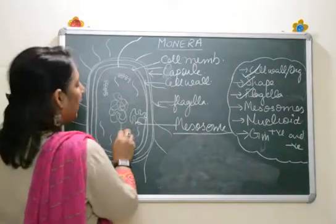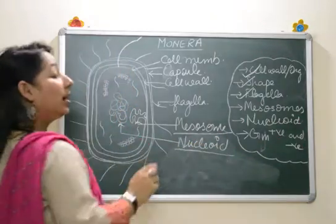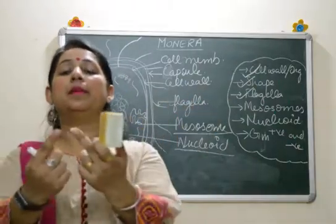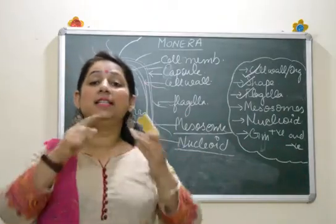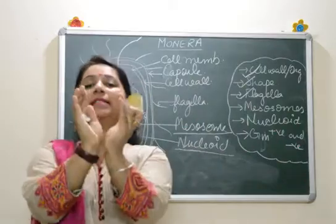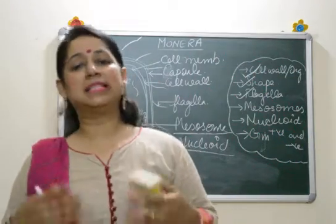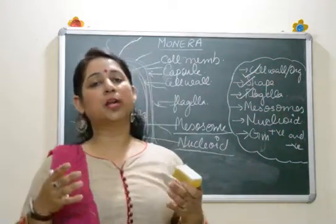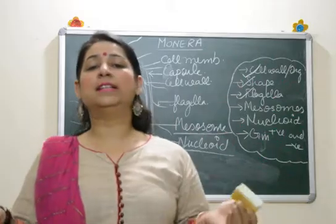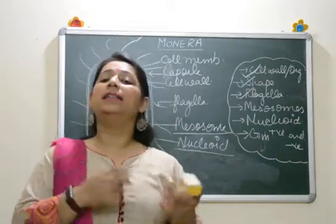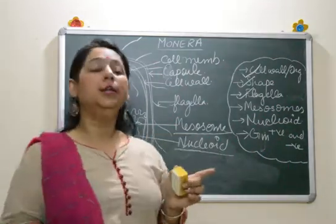The next structure is the nucleoid. It is not called a nucleus because it does not have a nuclear membrane, it does not have a nucleolus, and it lacks those characteristics. It is just a coiled DNA strand placed in the center of the cell — this structure is known as the nucleoid. It is the genetic material; in reproduction it is passed from one bacterium to the next, whether asexual or sexual reproduction, forming new bacteria.